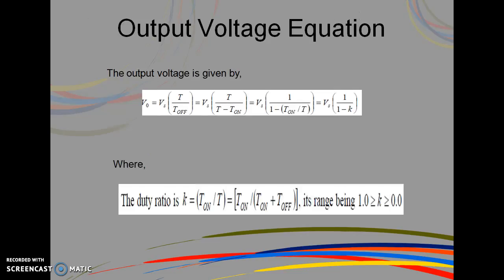The average value of the output equation is given as Vo equals Vs times T divided by T off, or Vs times 1 divided by (1 minus K), where K is the duty ratio which varies between 0 to 1, and K equals T on divided by the total time period T.